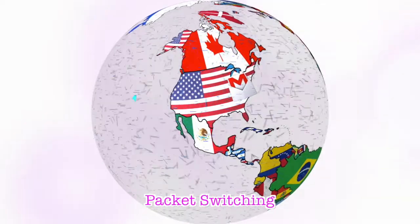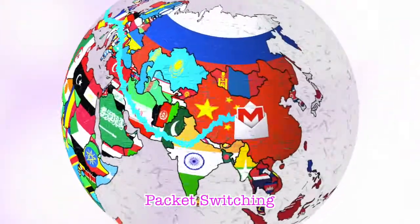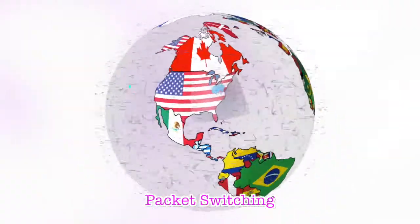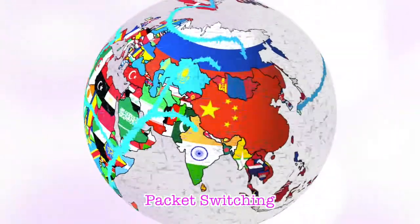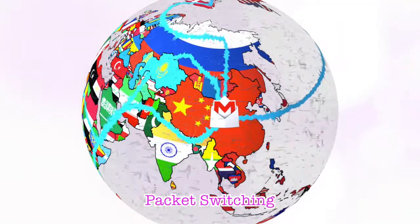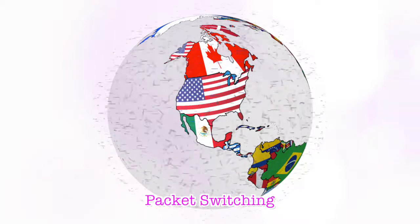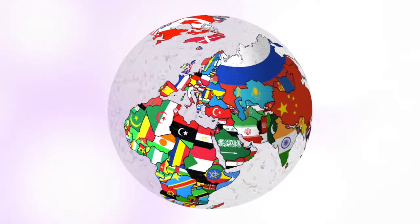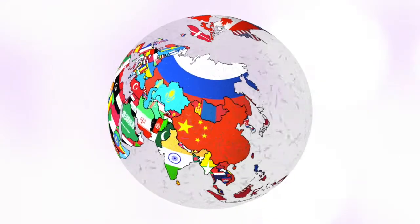Most data moves over the Internet in a completely different way called packet switching. Suppose you send an email to someone in China. Instead of opening up a long and convoluted circuit between your home and China and sending your email down it all in one go, the email is broken up into tiny pieces called packets. Each one is tagged with its ultimate destination and allowed to travel separately. In theory, all the packets could travel by totally different routes. When they reach their ultimate destination, they're reassembled to make the email again. Packet switching is much more efficient than circuit switching. You don't have to have a permanent connection between the two places that are communicating, so you're not blocking an entire chunk of network each time you send a message. Many people can use the network at the same time, and since your packets can flow by different routes, depending on which ones are quietest or busiest, the whole network is used more evenly, which makes for quicker and more efficient communication all around.